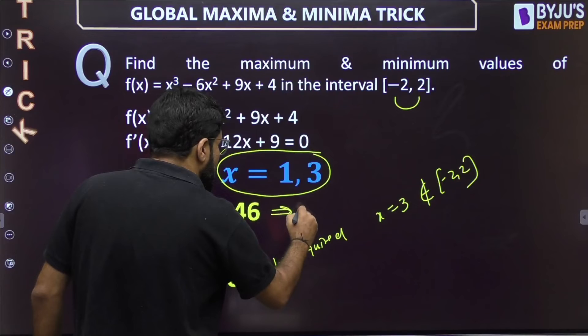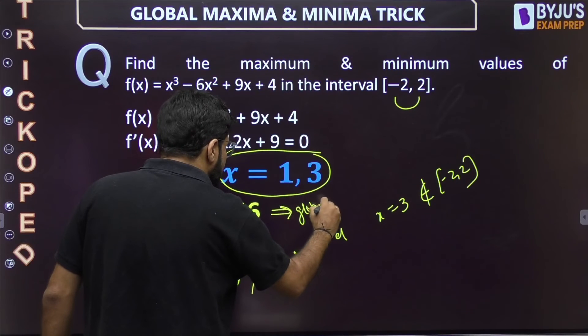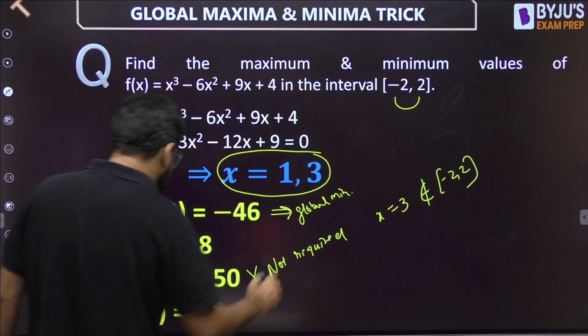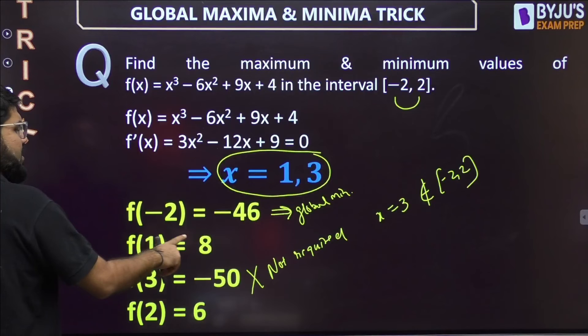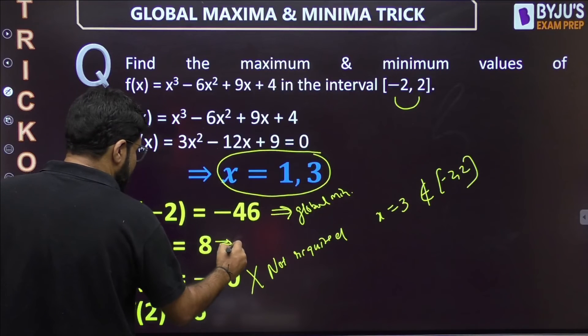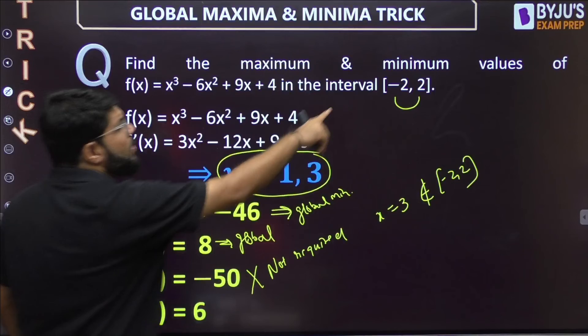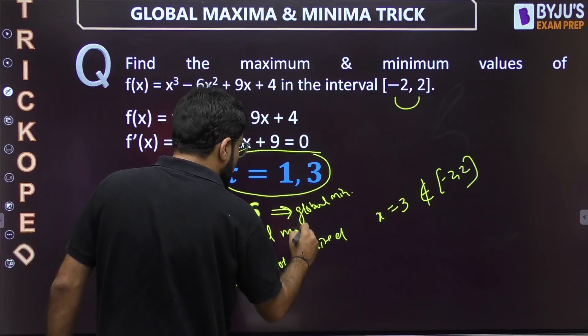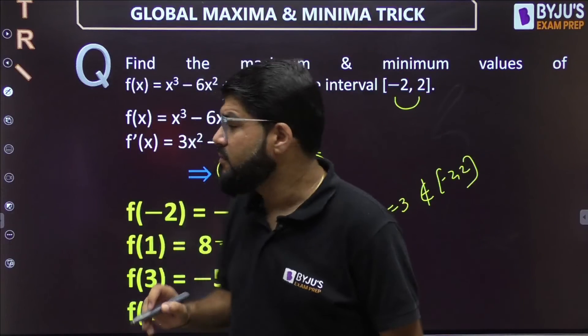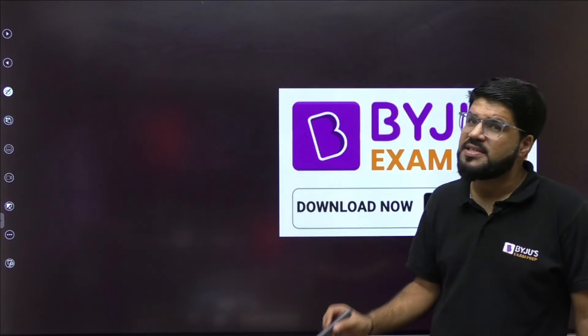So which is the global minima? This is the global minimum value, which is going to be -46. The global maxima is definitely 8, and this is the global maxima. It occurs at x = 1, which is in the interval, so it is allowed. So both the answers are in front of you. Minimum and maximum. The minimum value -46, the maximum value +8.